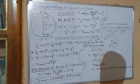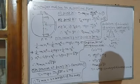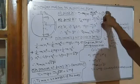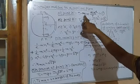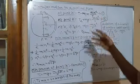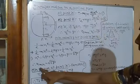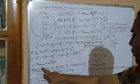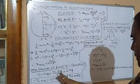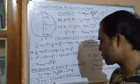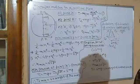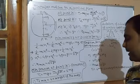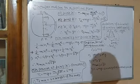Now we find the minimum tension at point A. From equation 1: T1 = mg + mv1²/R. Substituting V1_minimum² = 5gR: T1 = mg + m(5gR)/R = mg + 5mg = 6mg. So the minimum tension at point A is 6 times the weight of the body.